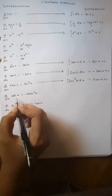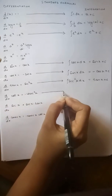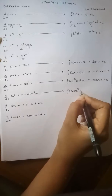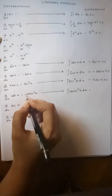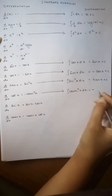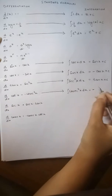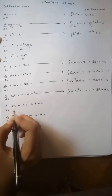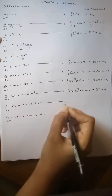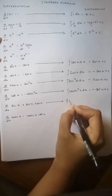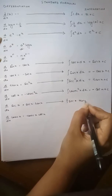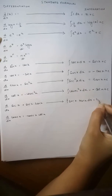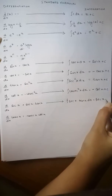Differentiation of cot x with respect to x gives us minus cosec squared x. Therefore integration of cosec squared x with respect to x: I have not taken my minus sign in the question, so the minus sign gets adjusted in my answer and the answer becomes minus cot x plus c. Differentiation of sec x gives us sec x into tan x, so integration of sec x into tan x with respect to x will give us sec x plus c.